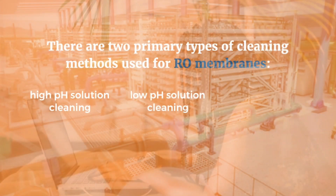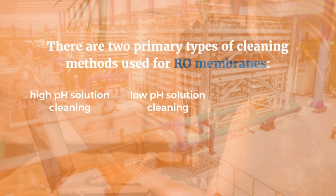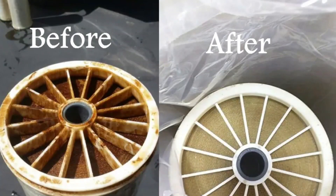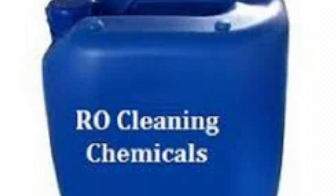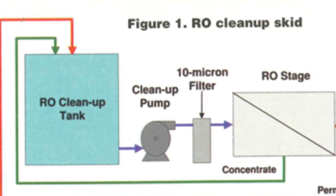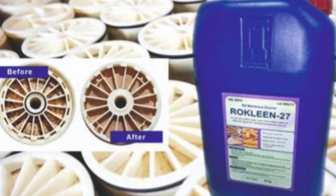There are two primary types of cleaning methods used for RO membranes: high pH solution cleaning and low pH solution cleaning. Successful membrane cleaning relies on both the effectiveness of the cleaning compounds, their professional application, and the design and operation of the cleaning equipment. For the best results, RO membrane cleaning should be performed with both high and low pH cleaning chemicals.